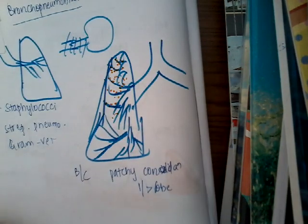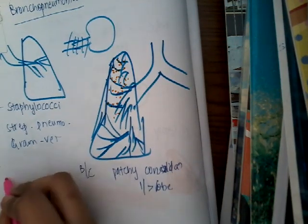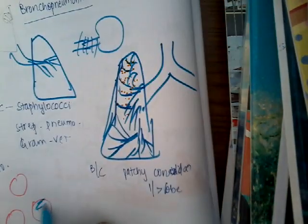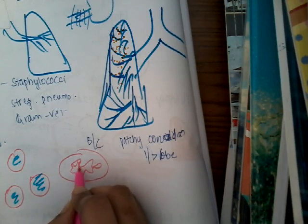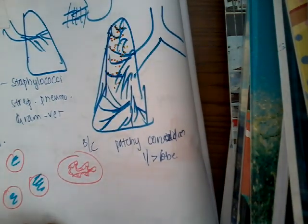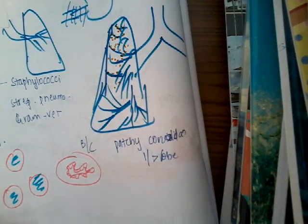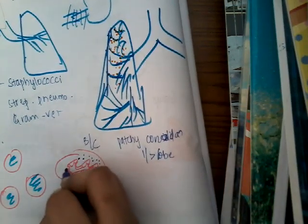Microscopically, the alveoli are less inflamed — they just have edematous fluid and are not significantly inflamed. But if you see the bronchiole, the bronchiole is inflamed and has neutrophilic exudate. The bronchiolar wall is also inflamed.